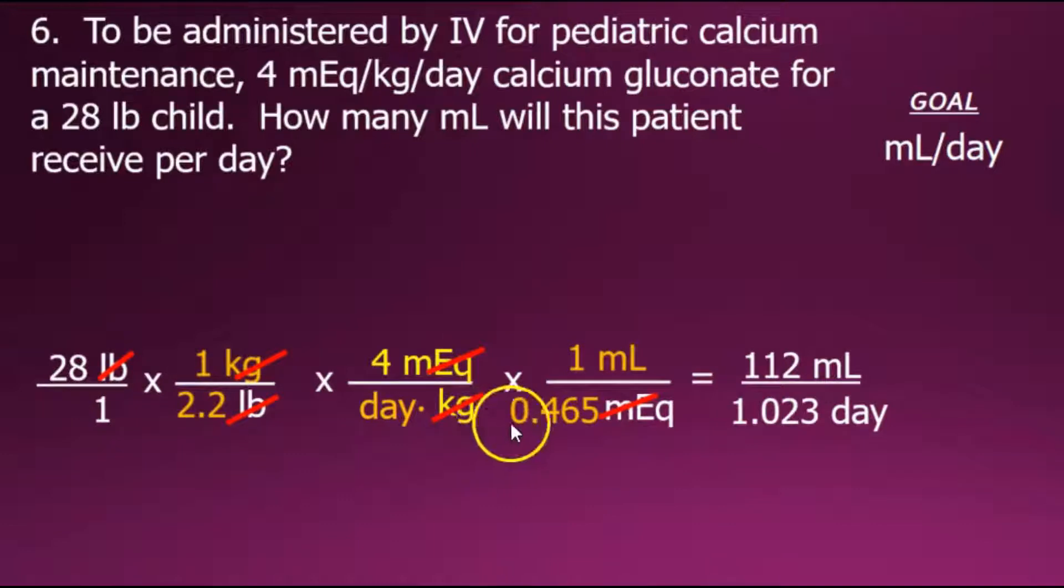By multiplying the numerators for the new numerator, multiplying the denominators for the new denominator, and last performing the division of the numerator by the denominator, to give us a final answer of 109.5 milliliters per day.